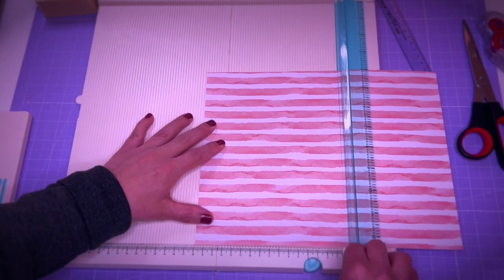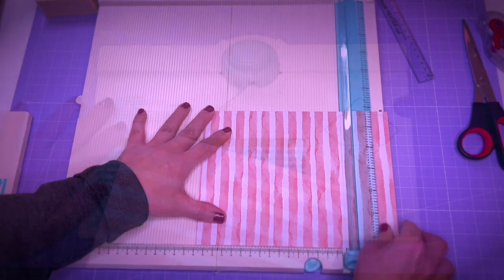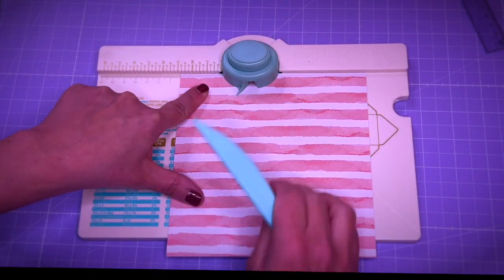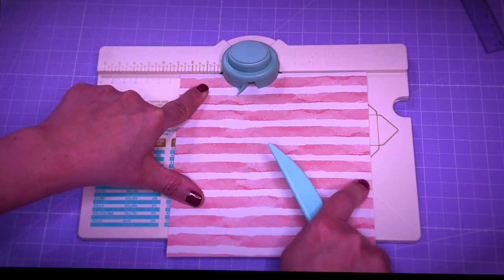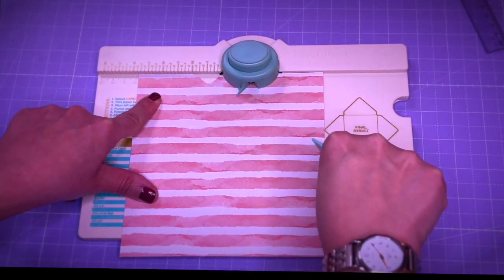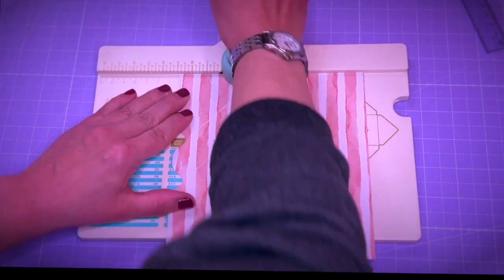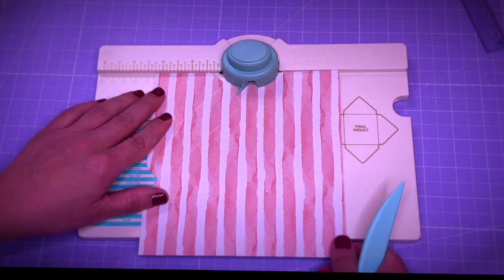And I will show you one more time with this particular example here. Again, we cut our paper to size. We move the paper to the first score indication, punch and score. Move it to the next one and punch and score again and then repeat it for all four sides.